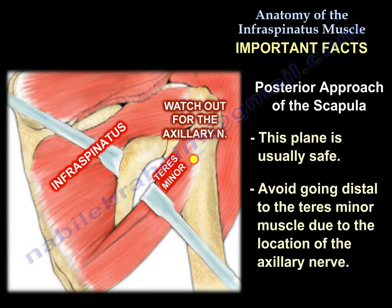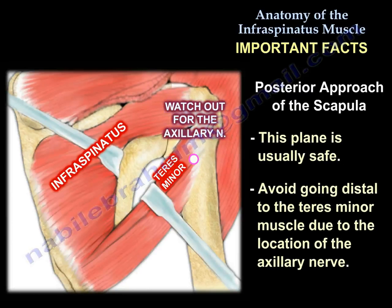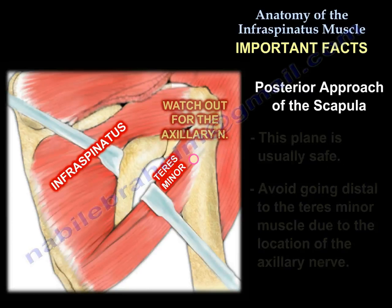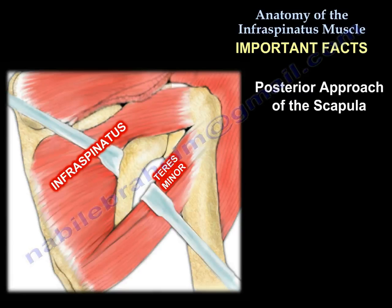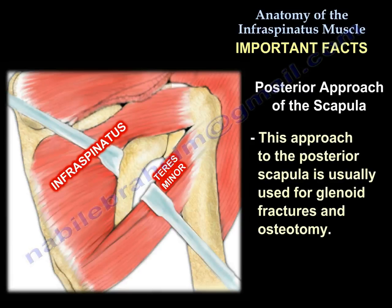Avoid going distal to the teres minor because the axillary nerve will be there. Because of that risk, some people prefer a muscle-splitting approach through the infraspinatus to avoid injury to the axillary nerve. That posterior approach of the scapula is usually used for glenoid fracture and osteotomy.